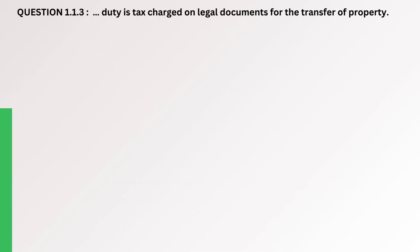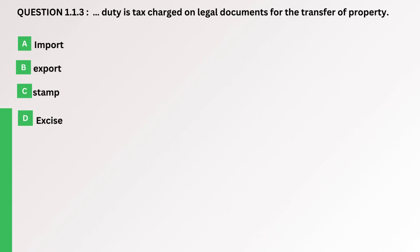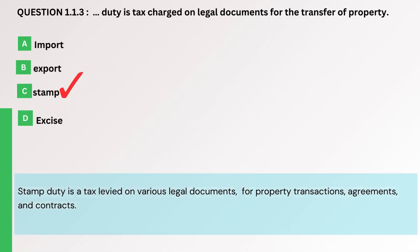Question. Duty is a tax charged on legal documents for the transfer of property. A. Import. B. Export. C. Stamp. D. Excise. The correct answer is C. Stamp. Stamp duty is a tax levied on various legal documents for property transactions, agreements and contracts.